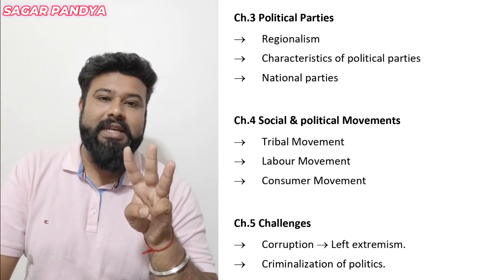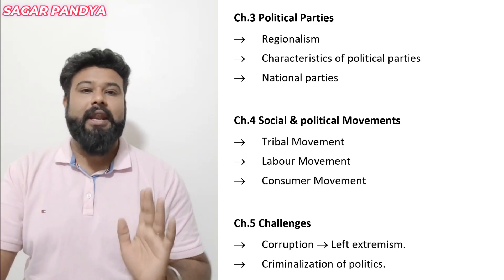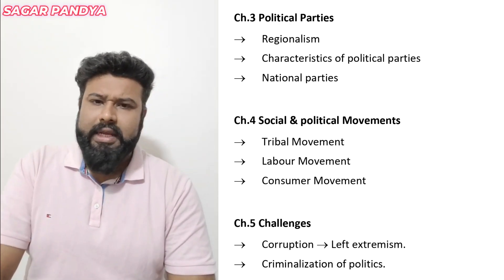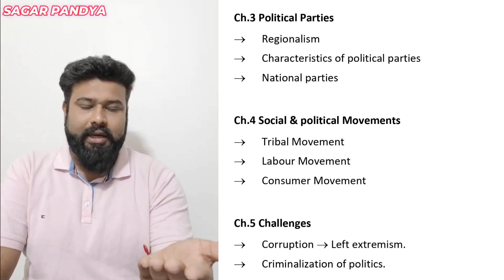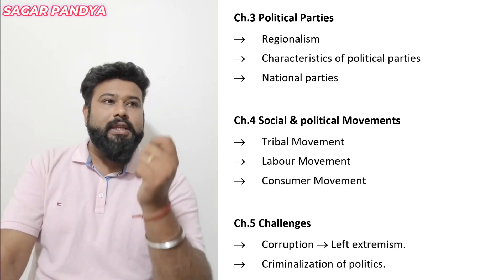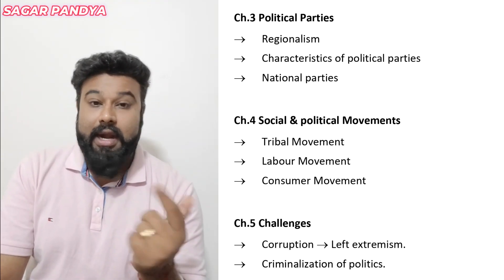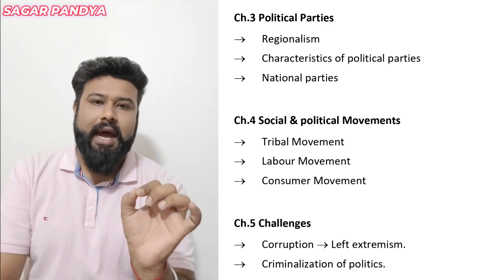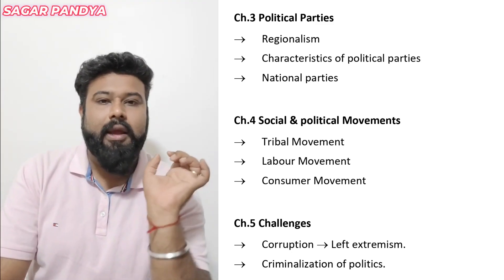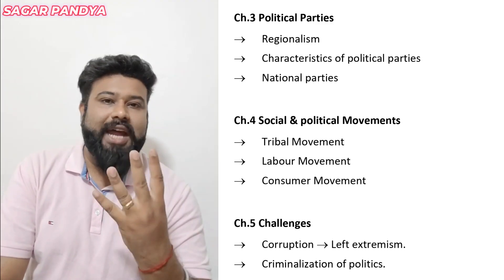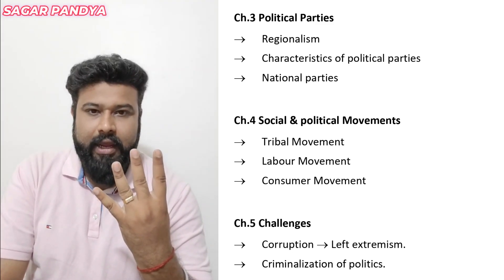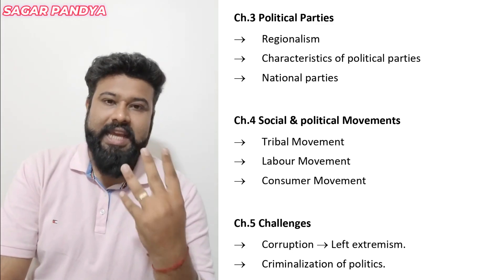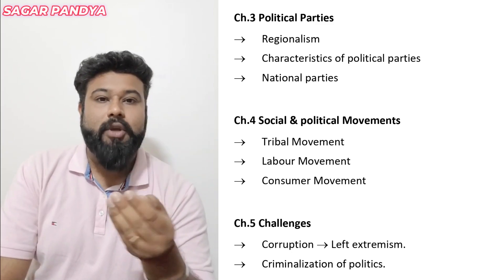The fifth chapter focuses on challenges — cover three answers: corruption, left extremism, and criminalization of politics. Dear students, for 12 marks of Political Science and History, always remember whenever you are writing answers, underline the important keywords. These keywords include names, places, events, and years — underline these four things.